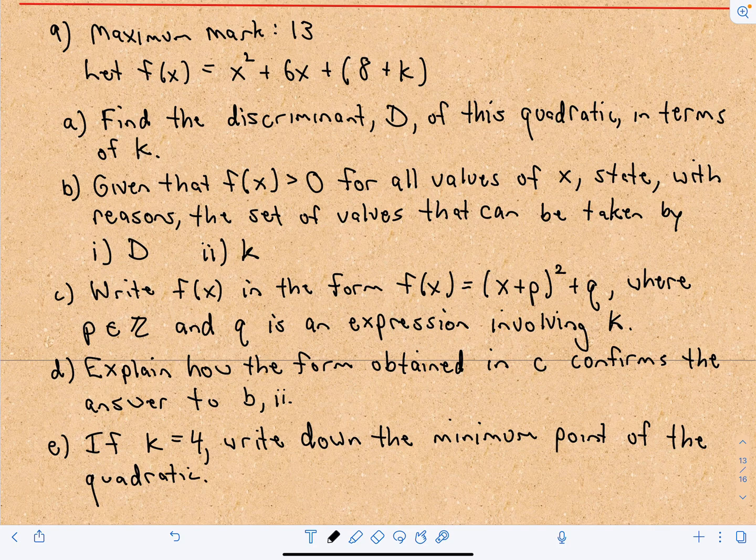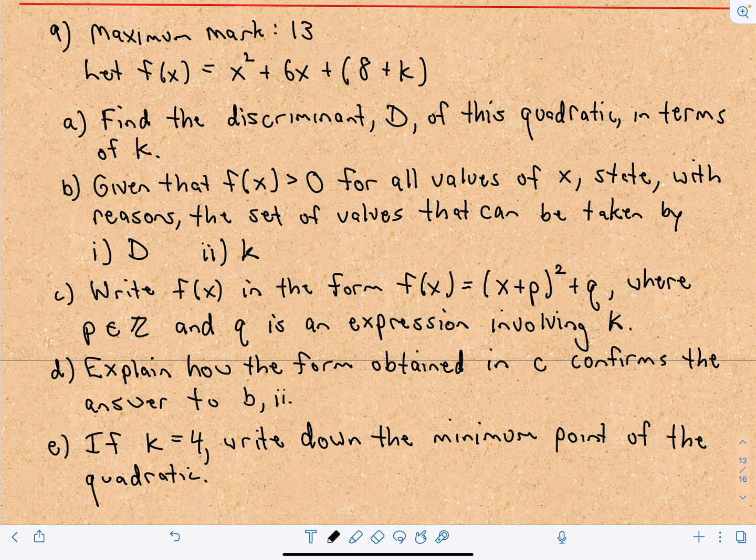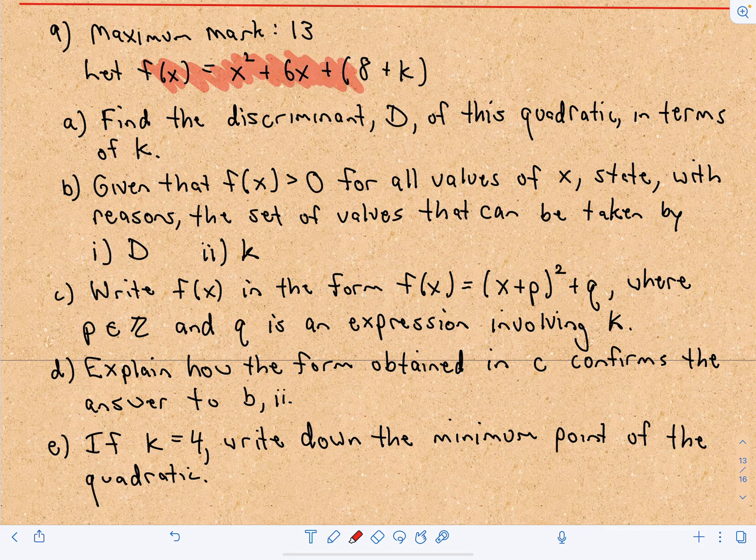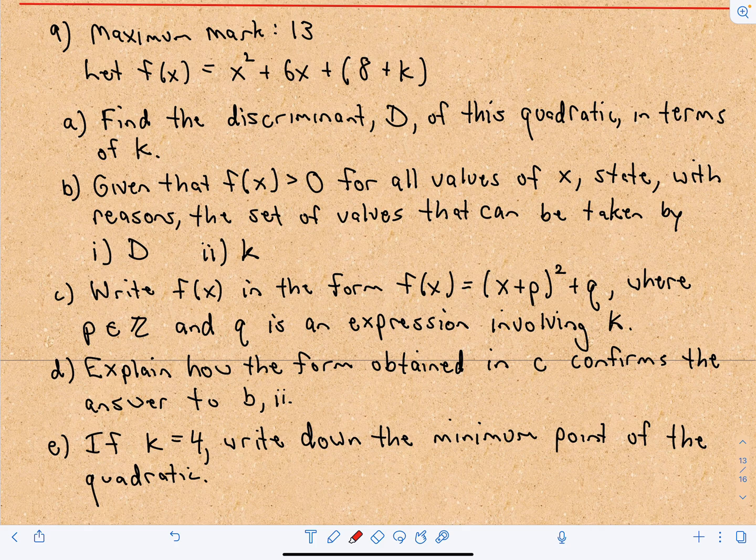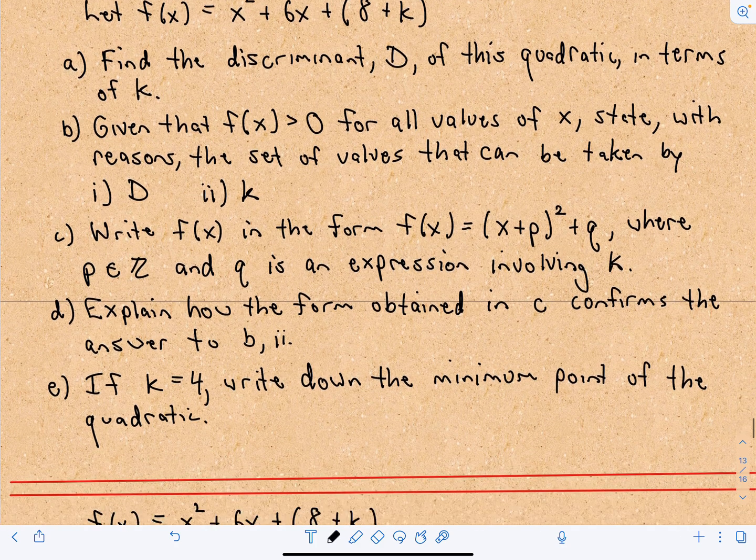All right, this video is going to be question number 9 from paper 1. This is the long answer section, so this question will have quite a few parts to it, as you can see here: A, B, C, D, and E, but we'll run through them all and they all do tie together. So we have this quadratic f(x) equals x squared plus 6x plus 8 plus k. And in the first part, we have to find the discriminant D of this quadratic in terms of k.